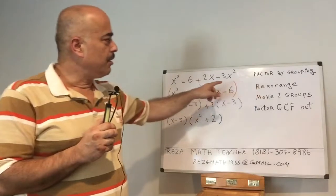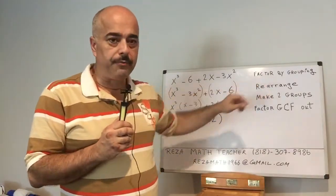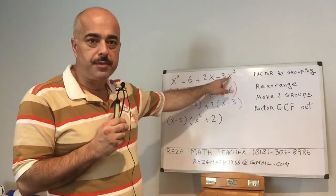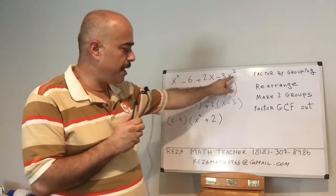So if you want to factor by grouping, first you have to check if you have four terms: one, two, three, and four.